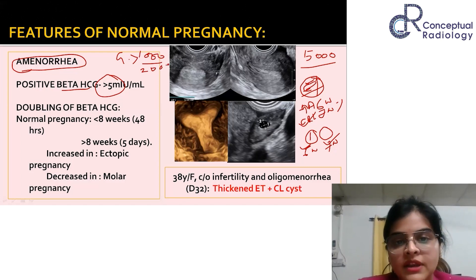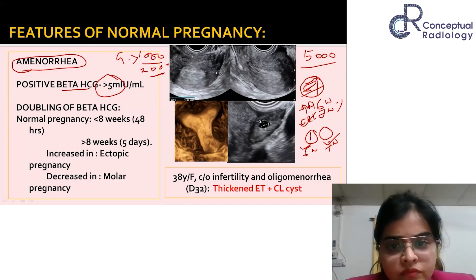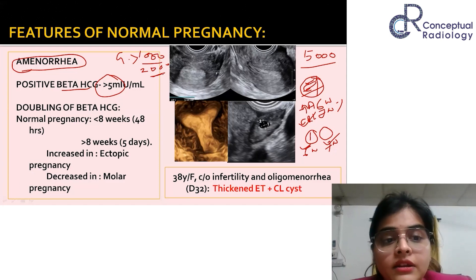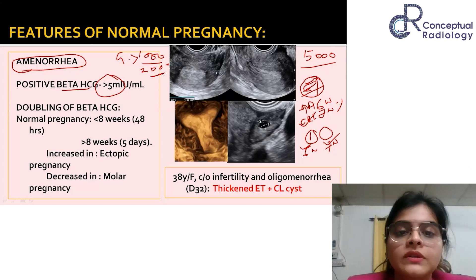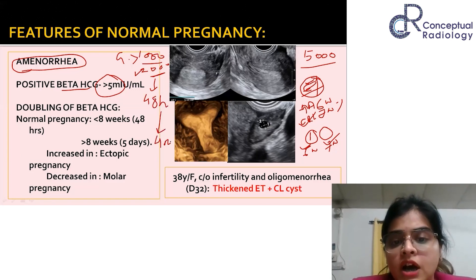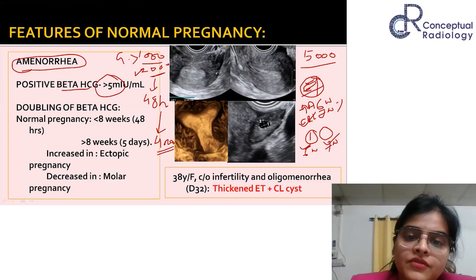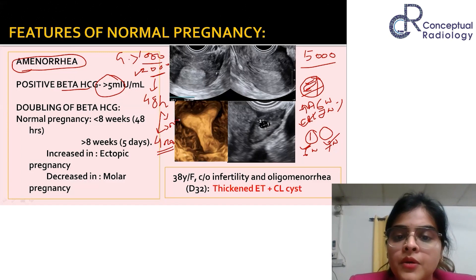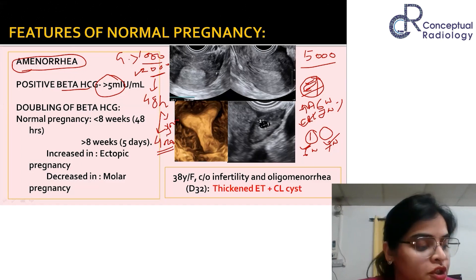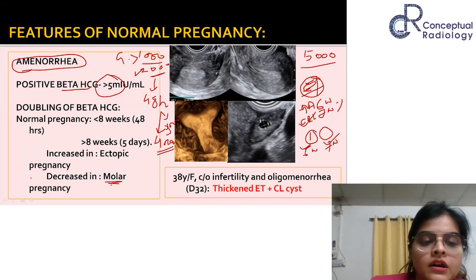Suppose beta-hCG is 2000 mIU/mL and you're not seeing any gestational sac. A single value has relevance, but doubling is more important than a single value. Repeat the beta-hCG after 48 hours. If it doubles to around 4000, it suggests an intrauterine pregnancy. If it rises to only about 3000 — increasing but not doubling — you should suspect an ectopic pregnancy. If the values are abnormally very high, then a molar pregnancy must be included in your differentials.